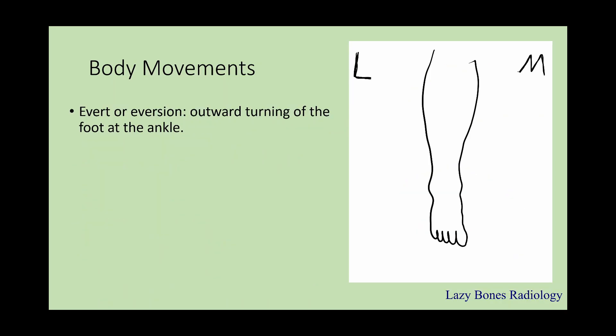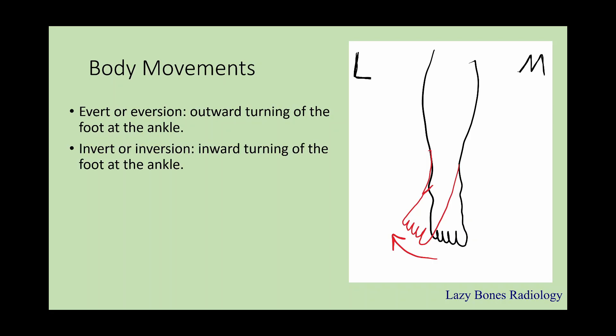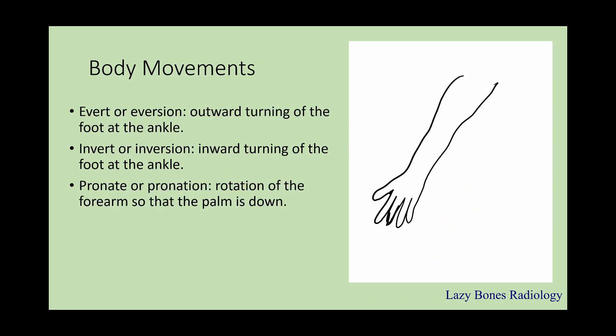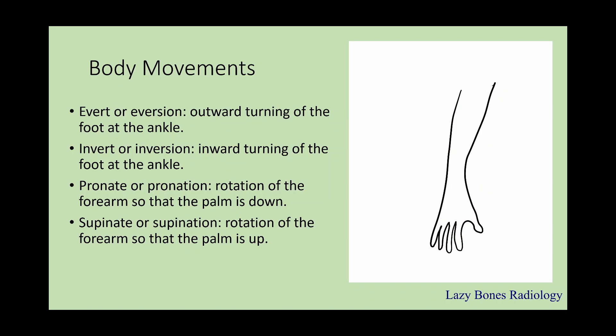Eversion is an outward turn of a foot at the ankle — as you can see here, the foot goes away. Inversion is an inward turn of a foot at the ankle — as you turn your foot inwards. Do not get these confused. Pronation is a rotation of the forearm so that the palm is face down. Supination is the opposite — a rotation of the forearm so that the palm is up.